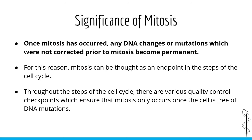Perhaps the most important thing to know about mitosis in regards to the cell cycle is that once mitosis has occurred, any DNA changes or mutations which occurred during replication cannot be corrected — the DNA mutations become permanent. For this reason, mitosis can be thought of as an endpoint in the steps of the cell cycle. Throughout the cell cycle, there are numerous complex quality control checkpoints which ensure that mitosis occurs only when the cell is free of DNA mutations, ensuring that no errors from DNA replication are carried forward.